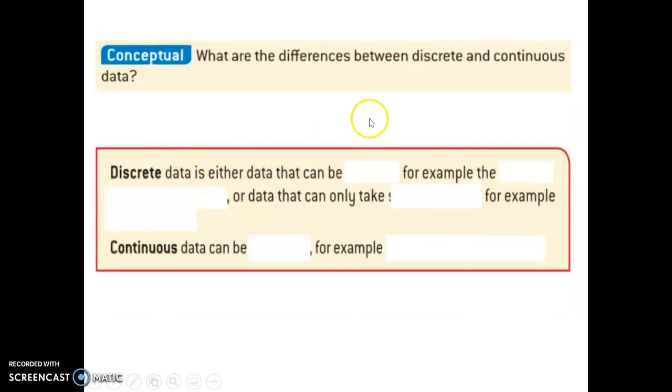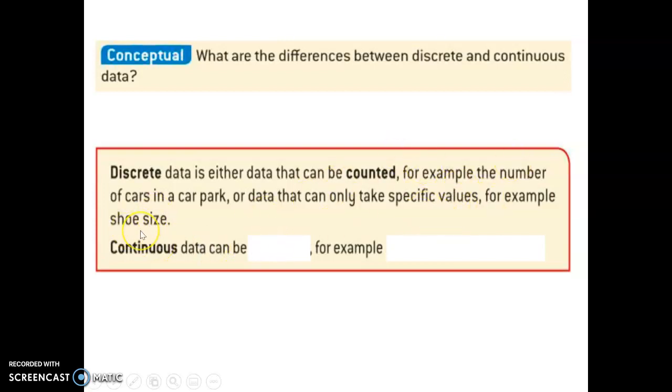Let's answer that here. Discrete data is either data that can be counted, for example, the number of cars in a car park, or data that can only take specific values, for example, shoe size. We can count the number of cherries, one cherry or two or three. Data that can be counted, or data that can only be specific values. Shoe sizes can be half sizes. For example, you could have 40.5 centimeter shoe size, or seven and a half shoe size. But it cannot be any other decimal value. It can be some decimal values, like the halves, but nothing else.